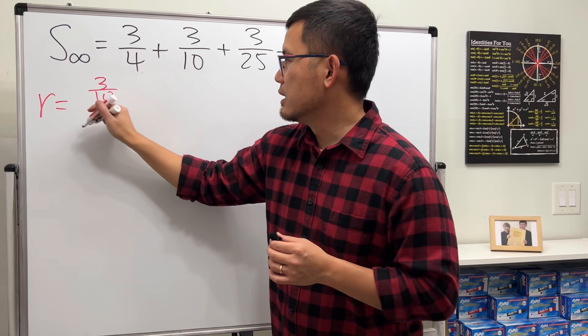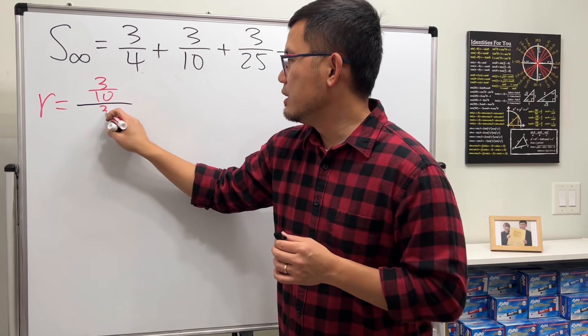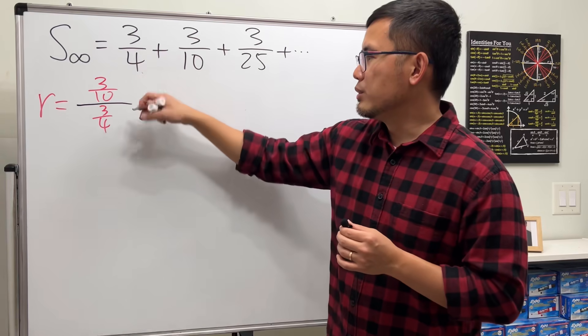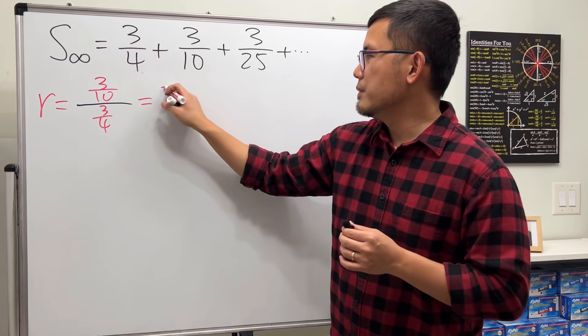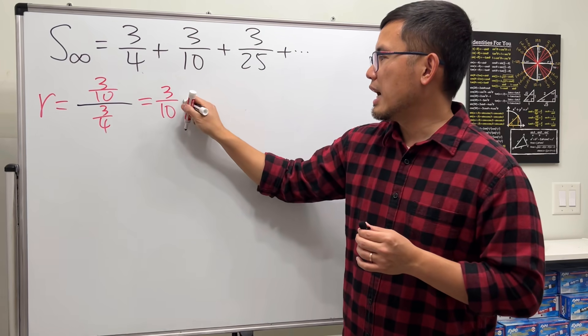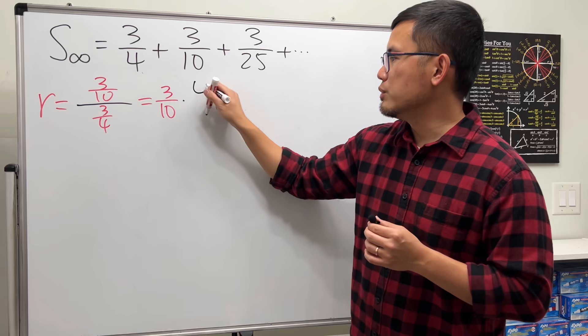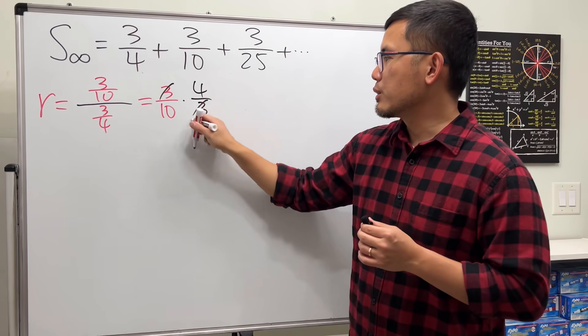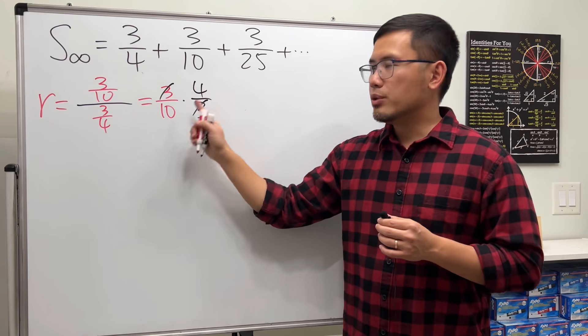To divide, you can just look at this term, 3 over 10, times the reciprocal of that, which is 4 over 3. This and that cancel, divided by 2, divided by 2, so you get 2 over 5.